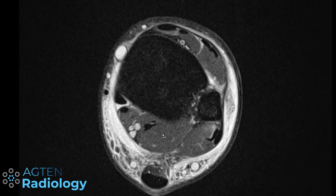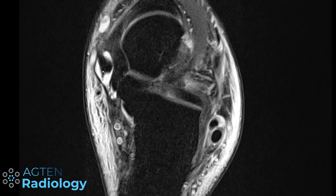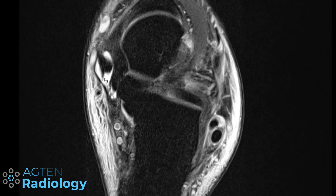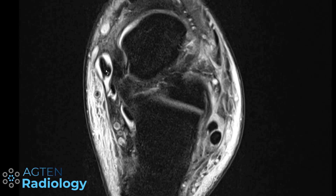So in older publications they talk about how the most distal portion of the posterior tibial tendon, because it's not covered by tendon sheath, is instead covered by paratenon — similar to the Achilles tendon. Therefore, any fluid or edema around the most distal portion of the posterior tibial tendon is considered to be paratenon inflammation, called peritendinitis or peritendinitis, as it's frequently called.